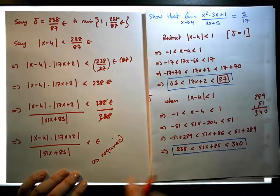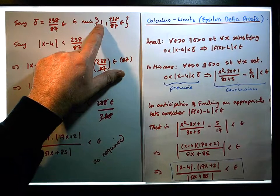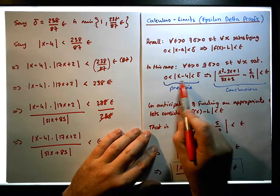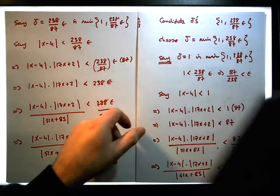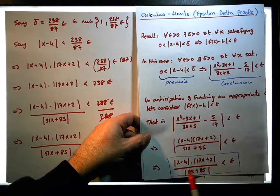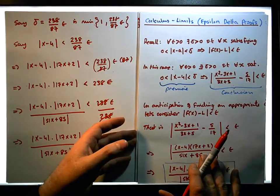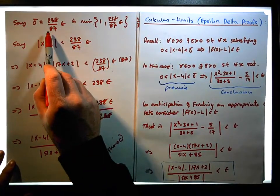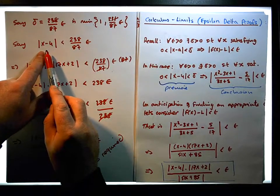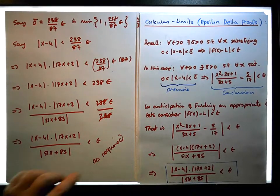So we've shown that we can deduce the conclusion under two conditions. When delta was equal to 1, we deduced from this particular premise this particular conclusion. When we chose delta to be the possible other minimum value — which is 248 over 87 of epsilon — and started with the premise again, we once again deduced the conclusion.